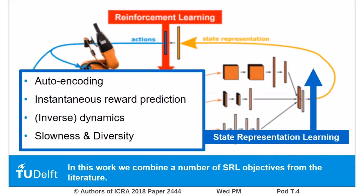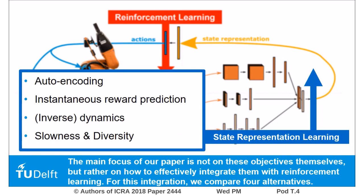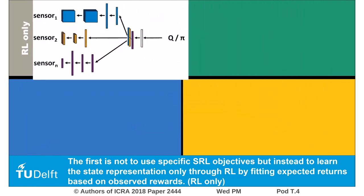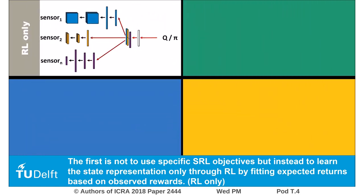In this work we combine a number of state representation learning objectives from the literature. The main focus of our paper is not on these objectives themselves but rather on how to effectively integrate them with reinforcement learning. For this integration we compare four alternatives. The first is not to use specific state representation learning objectives but instead to learn the state representation only through reinforcement learning by fitting expected returns based on observed rewards.